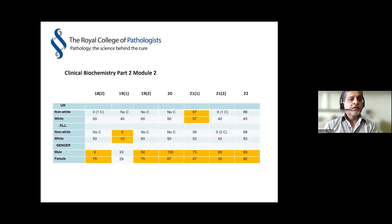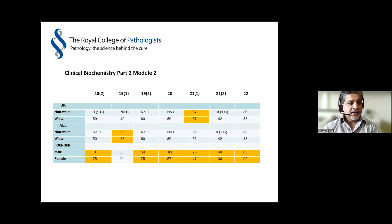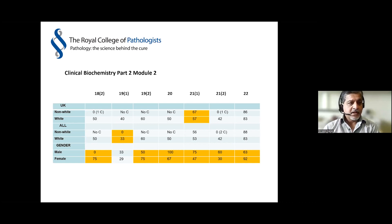Looking at Module 2 of clinical biochemistry Part 2, there's not much variation here, except surprisingly a differential attainment between males and females, and I have absolutely no idea why that might be.